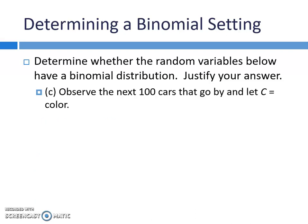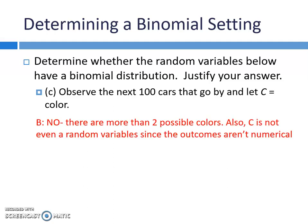Next example: observe the next 100 cars that go by and let C represent the color of the car. Is this binary? No — there are more than two possible colors. Also, C wouldn't even be considered a random variable since the outcomes aren't numerical. We can't do calculations with reds and silvers and whites. So this is not a binomial setting.